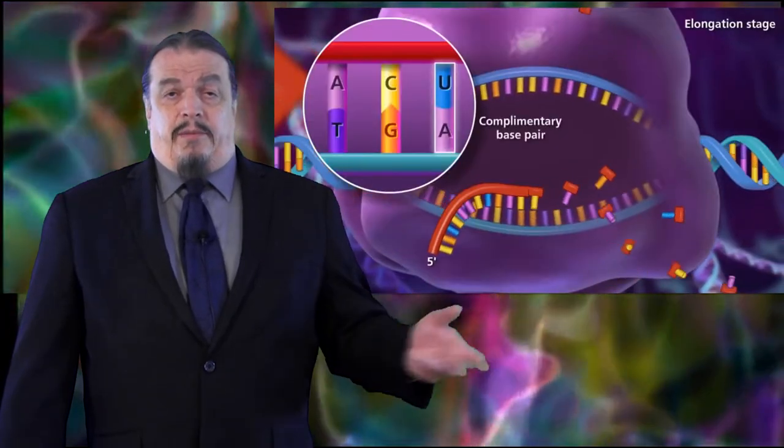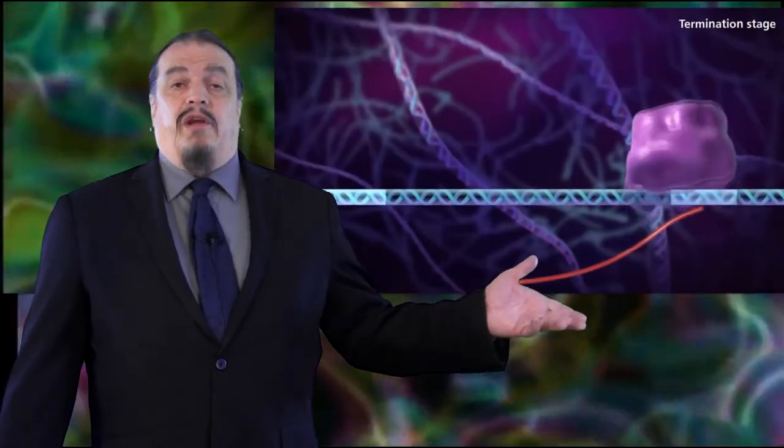But when it's translated later on, the copy still ends up being the same configuration of amino acids. Once the polymerase reaches the terminator region, it breaks off, and now we have a new strand of RNA.